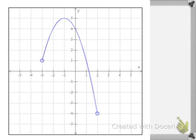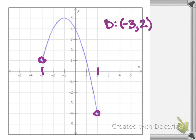Looking at this graph, let's talk first about the domain. The domain is our x values, so starting from the x value on the furthest left side, that would be this point right here which occurs at the x value of negative 3. Since that is an open circle we will use a parenthesis with negative 3. Now we need to find the rightmost x value, which occurs at this open circle at the x value of positive 2. So positive 2 with a parenthesis because of the open circle. That gives us our domain shown on the number line.